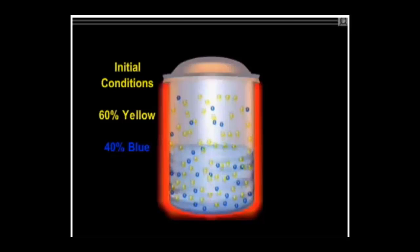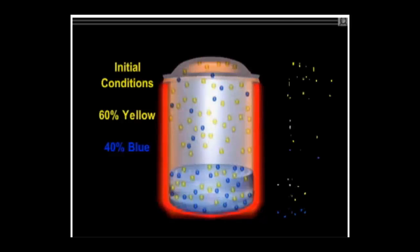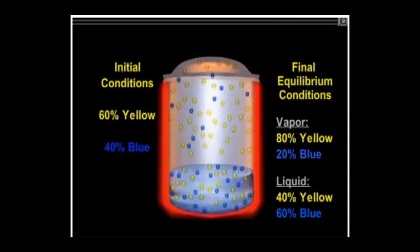a 9 to 1 yellow to blue mole ratio rises to the vapor phase. At equilibrium, the vapor phase is 80% yellow moles and 20% blue moles. The liquid phase is 40% yellow moles and 60% blue moles.